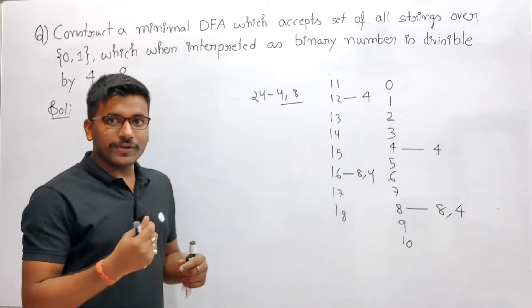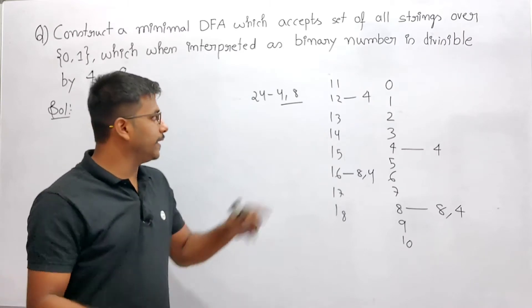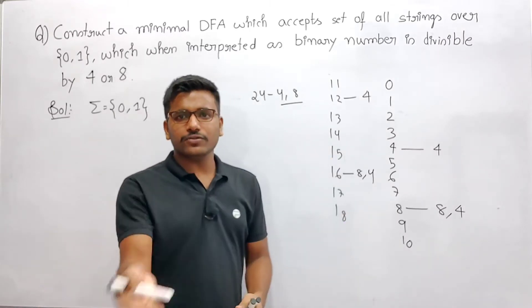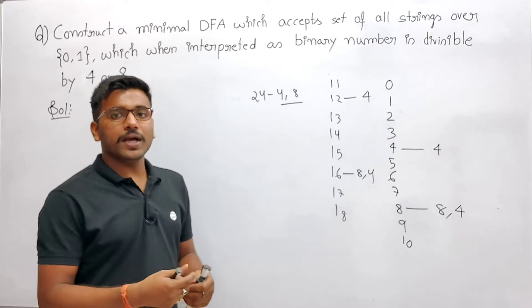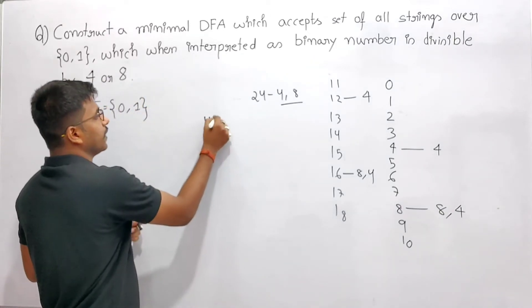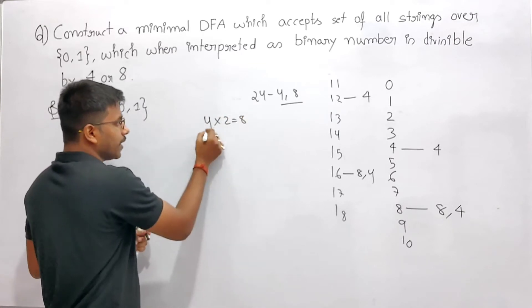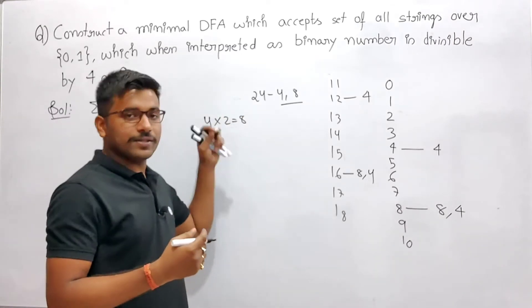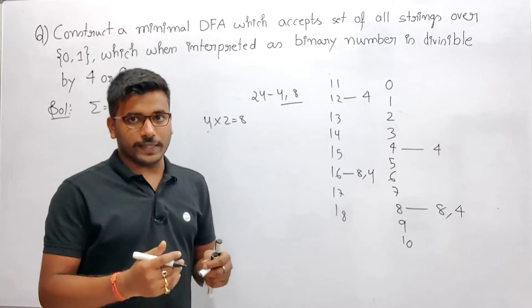If you take 24, it's again divisible by both 4 and 8. The main thing is that whatever number is divisible by 8, like 24, 8, 16, is also divisible by 4, because 8 comes in the multiple of 4. 4 times 2 is 8.